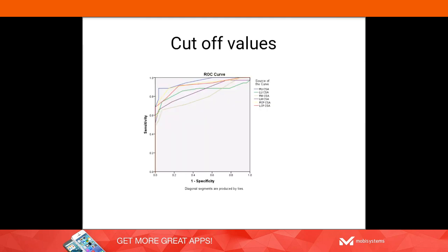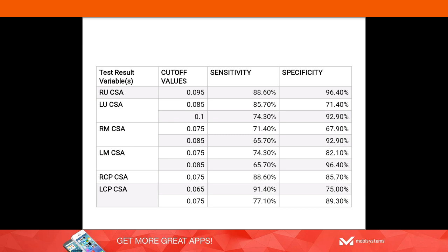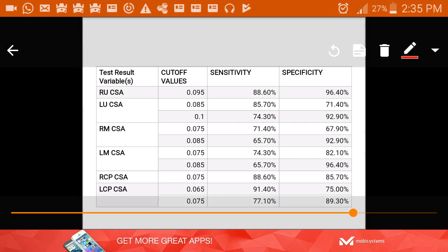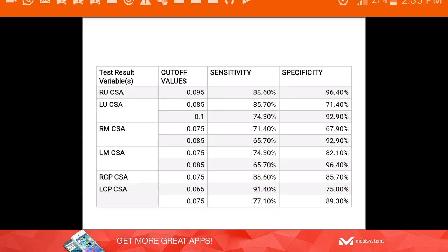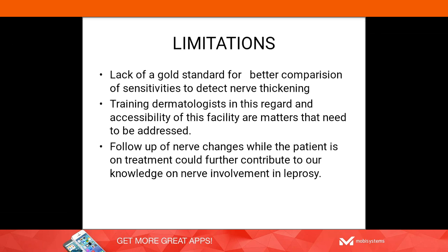To determine cutoff values for defining nerve thickening on ultrasound, we used receiver operating characteristic (ROC) analysis. We established cutoff values for the right and left ulnar, median, and common peroneal nerves, along with sensitivity and specificity for each. Most cutoff values lie between 0.08 and 0.10 cm².